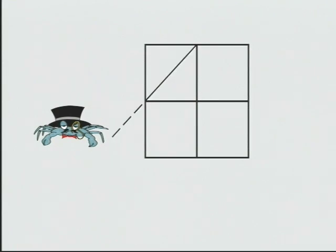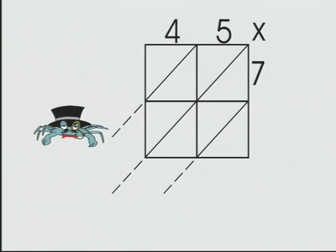Next, we add our diagonals from the right. Once done, we add our problem, 45 times 76.